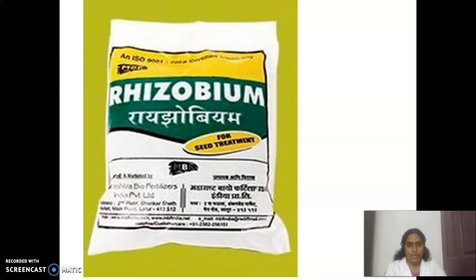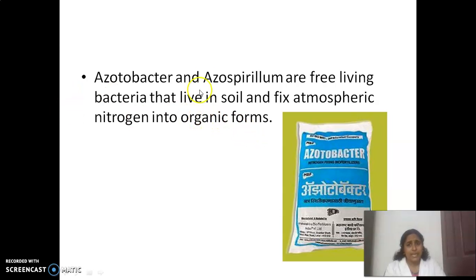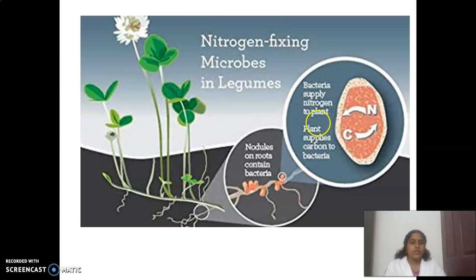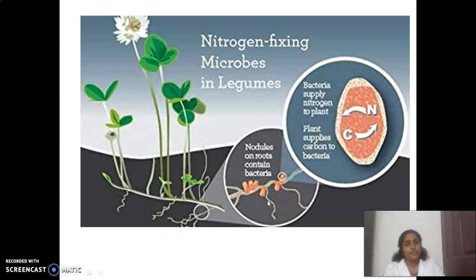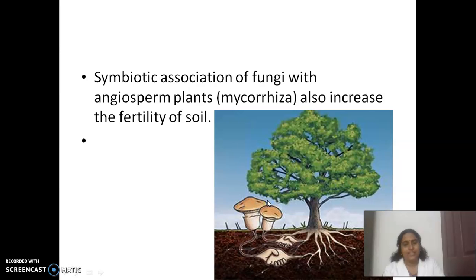Another example: Acetobacter and Azospirillum are free-living bacteria that live in soil and fix atmospheric nitrogen into organic forms. Bacteria supply nitrogen to plants, and plants supply carbon to bacteria. They survive in the nodules of leguminous plants.